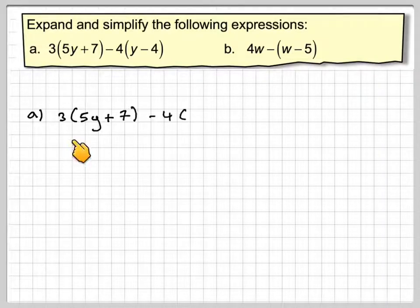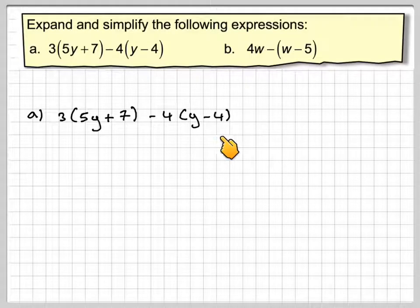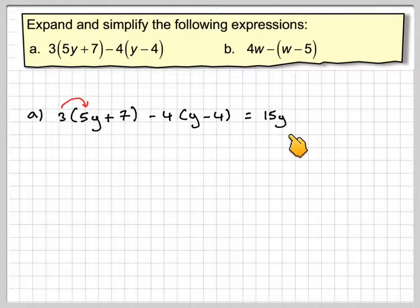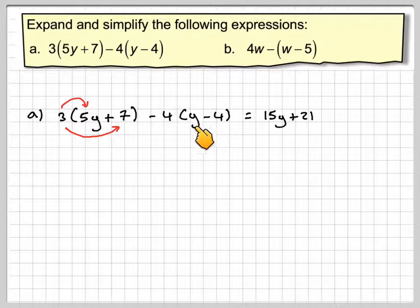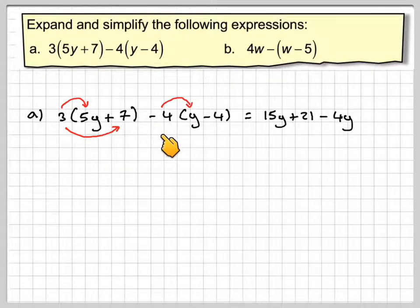So we've got 3 brackets 5y plus 7 minus 4 brackets y minus 4. We do 3 times 5y which gives me 15y, 3 times 7 which gives you plus 21. Minus 4 times y which gives me minus 4y. And then we've got to be careful here.